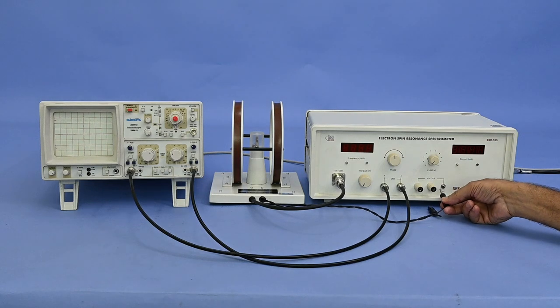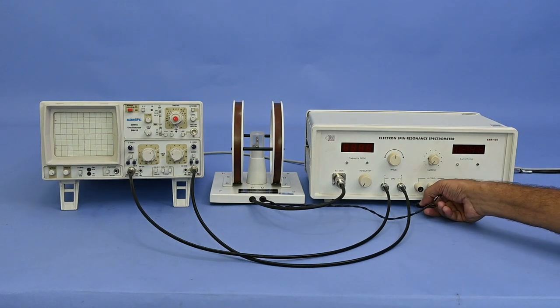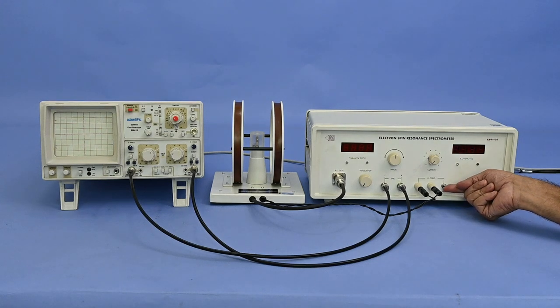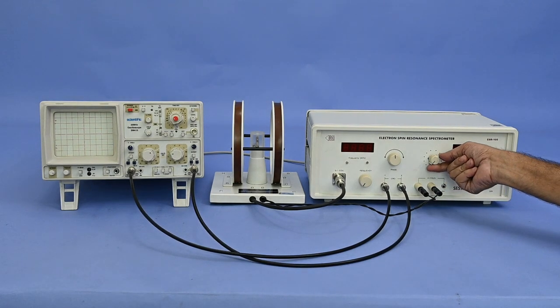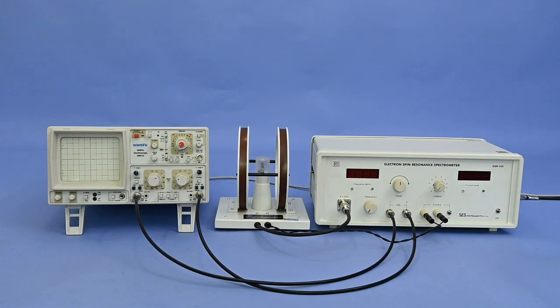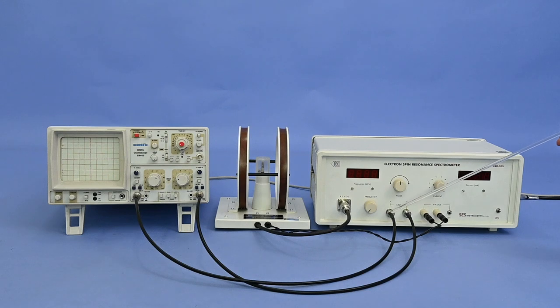Connect Helmholtz coil leads to H coil terminals with switch in OFF position and current at minimum step. Connect X and Y output signals of the ESR main unit to X and Y channels of the CRO.